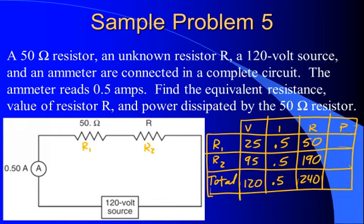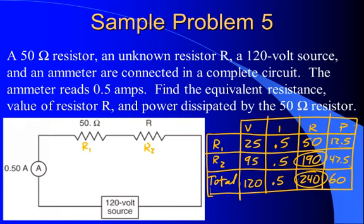Filling in the power column: P for R1 = 0.5 times 25 = 12.5 watts. P for R2 = 95 times 0.5 = 47.5 watts. Total power = 120 times 0.5 = 60 watts, which also equals 12.5 plus 47.5. To answer the questions: equivalent resistance is 240 ohms, resistor R equals 190 ohms, and power dissipated by the 50 ohm resistor is 12.5 watts — all solved by making one VERP table.